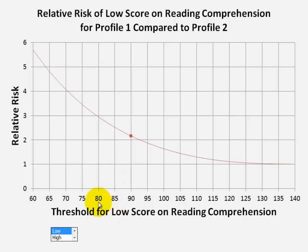If we want to know how much more likely is it for someone to score 80 or lower on reading comprehension with profile 1 compared to profile 2, we can see in the curve that it's almost 3 times higher. Even though it would be very rare for someone to score 70 or lower on reading comprehension for either profile, it is 4 times more likely with profile 1 with the working memory weakness compared to profile 2 without the working memory weakness.